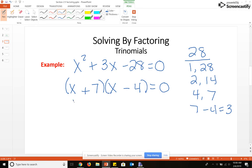Now we're going to take the X plus 7, set it equal to 0, and the X minus 4, set it equal to 0, and we will subtract 7 to get negative 7, and add 4 to get positive 4.